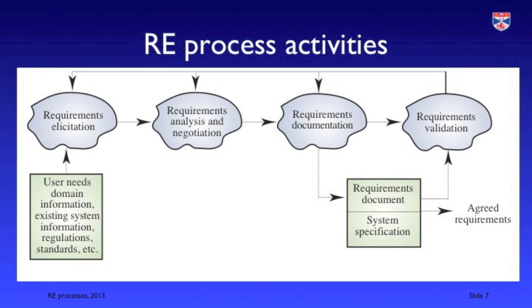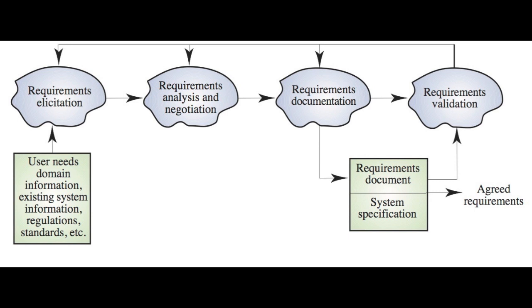We then have to document these requirements — write them down in such a way that they're understandable to both the system stakeholders and the system engineers. This is one of the main reasons why formal descriptions of a system have not been widely adopted: a formal system description in mathematics is often inaccessible to stakeholders and they can't be sure it's an accurate description of their requirements. The final stage of the requirements engineering process is validation, where we take the requirements back to the stakeholders and ask: is this what you really want?